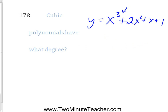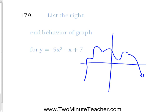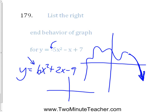List the right-end behavior of a graph for negative 5x squared minus x plus 7. The right end of that graph has to be heading downwards. No matter what it does in the middle, if the leading coefficient is negative, the right-hand end of the graph must be going down. So the right-end behavior is down. Conversely, if you had y equals positive 6x squared plus 2x minus 9 — a positive number out front — then the right-hand side must be going up. It's all about the lead coefficient.